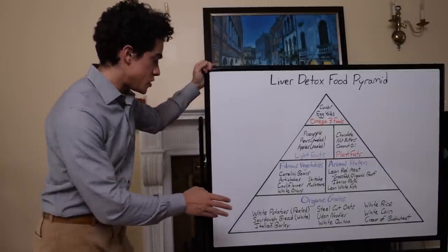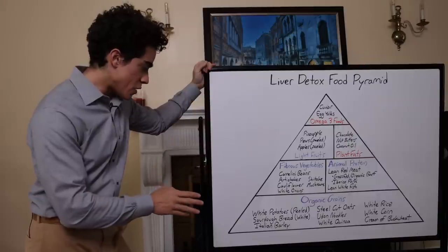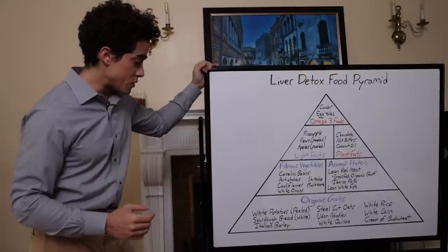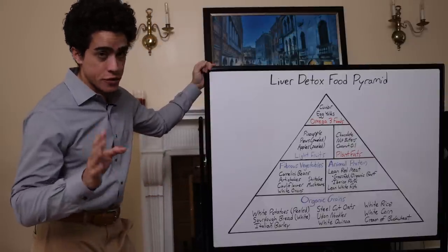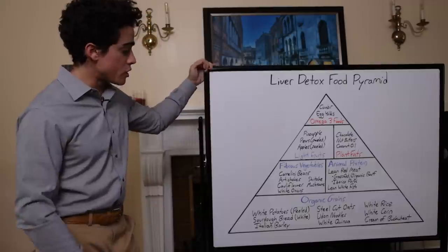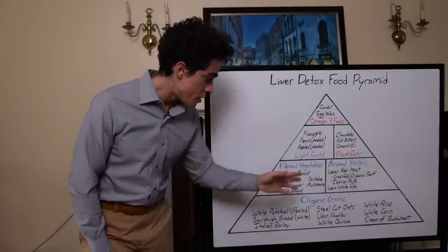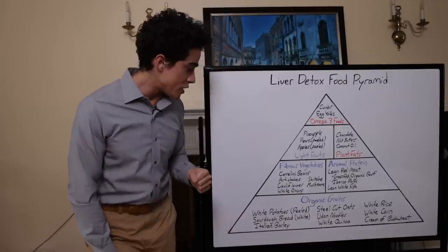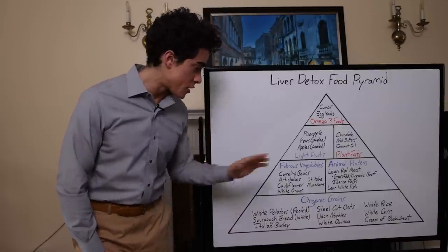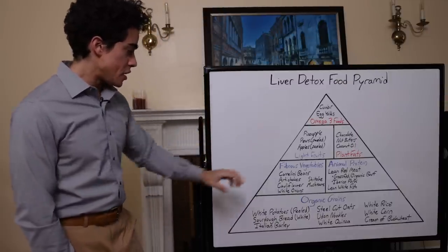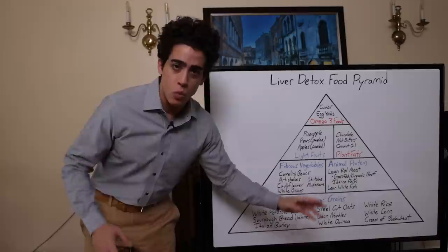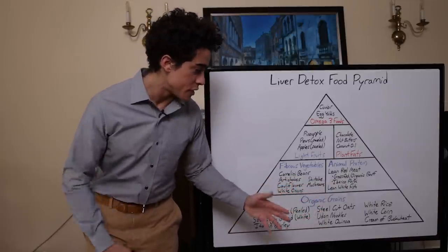So we have white potatoes peeled, sourdough bread made with organic white flour and preferably filtered mineral water, glass bottled mineral water. We have Italian barley - all barley should be fine, I just like the Italian better. Steel cut oats, udon noodles made from white flour, white quinoa. Those six are what I've been eating a lot of, what I feel really good on.